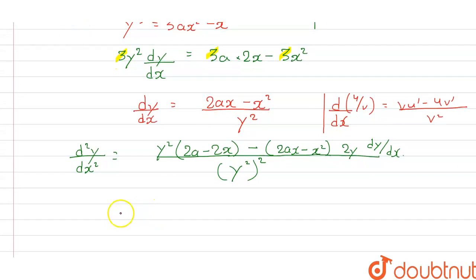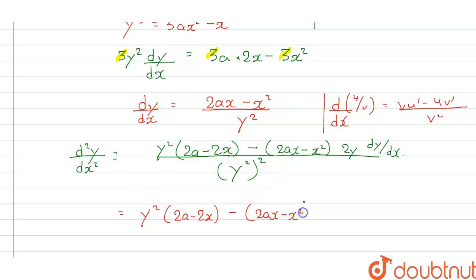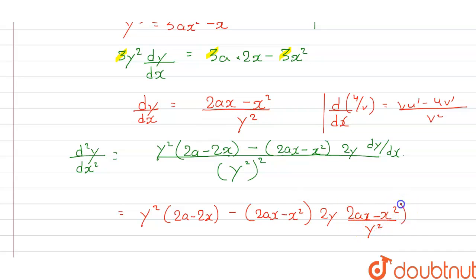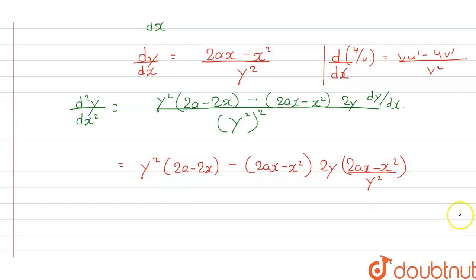This simplifies to: y² times (2a minus 2x) minus (2ax minus x²) times 2y, and dy/dx is (2ax minus x²) divided by y², so we write that function in. The whole expression is divided by y⁴. One y cancels, leaving y to the power 4 in the denominator.